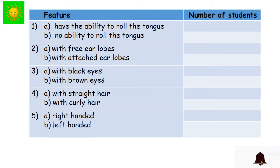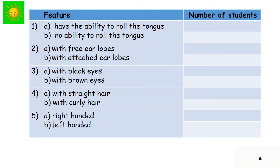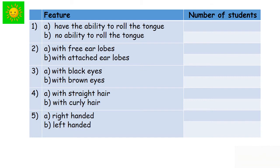Continue tabulating students with features such as: black eyes, brown eyes, straight hair, curly hair, right-handed, and left-handed. You can tabulate the number of students with each feature and get some kind of idea about the variation within the same species.